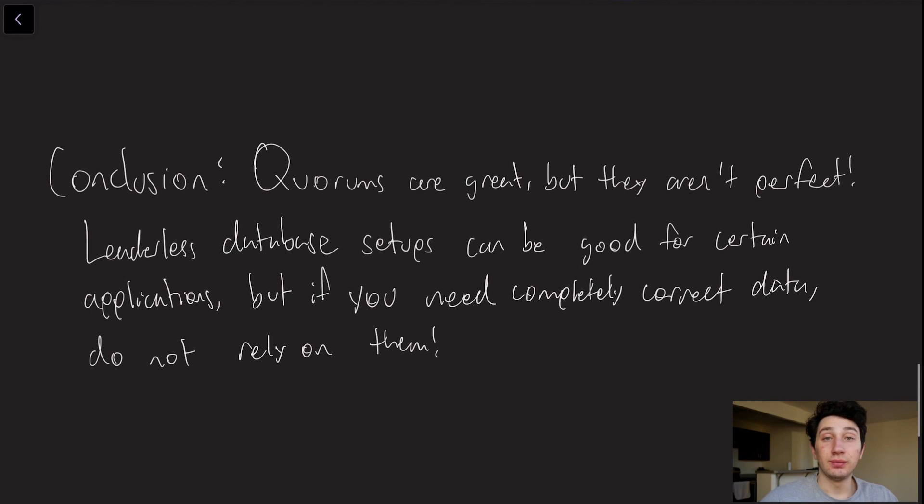So basically, in conclusion, quorums are really useful. The majority of the time, they are actually going to result in behavior that resembles strong consistency. However, strong consistency is not truly strong consistency unless there are no edge cases, unless you know with 100% certainty and mathematical guarantees that if you're reading data at the same time as someone else, you're both going to agree on the value you're getting. So basically, leaderless setups can be really good for these relatively chill client-side applications, something like a social media app where it's not the end of the world if some data gets lost.